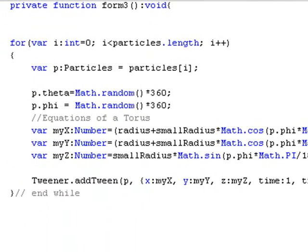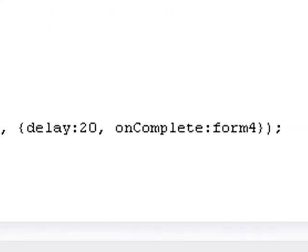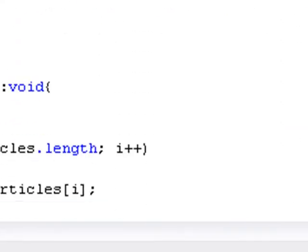And here's the equation for the torus. And once again, you just basically add the different particle X, Y, and Z of the torus geometry. And then at the end of 20 seconds, for example here, you go to onComplete 4. And that form, of course, is the ellipsoid.